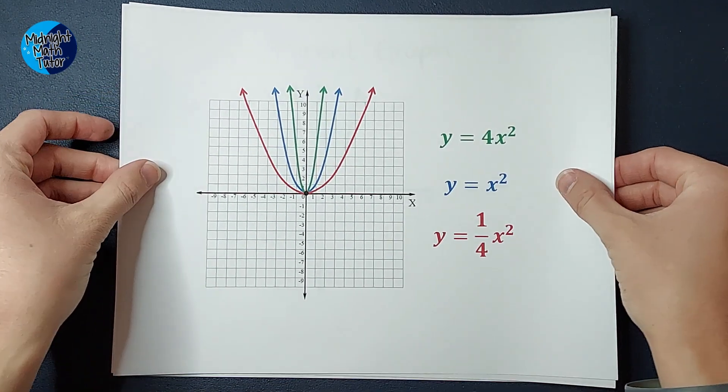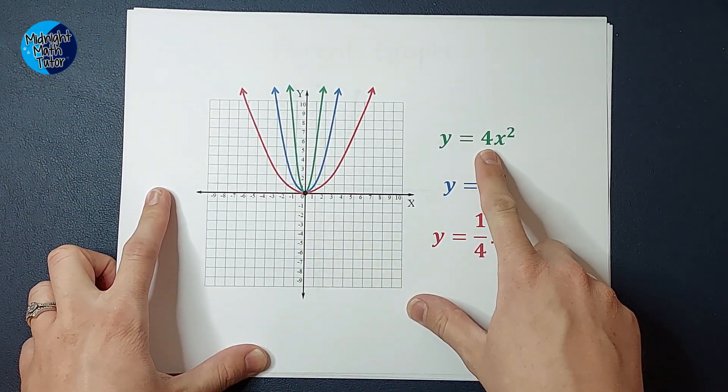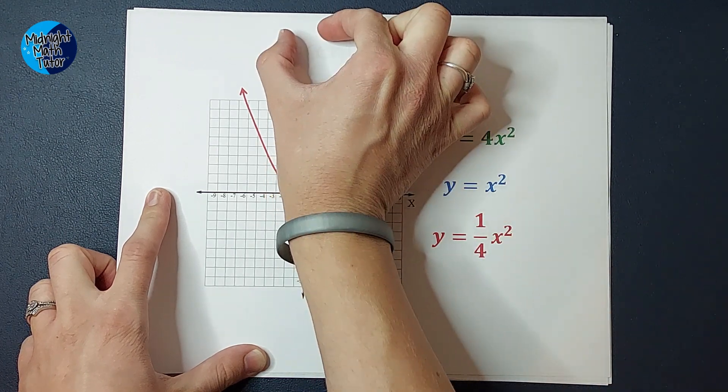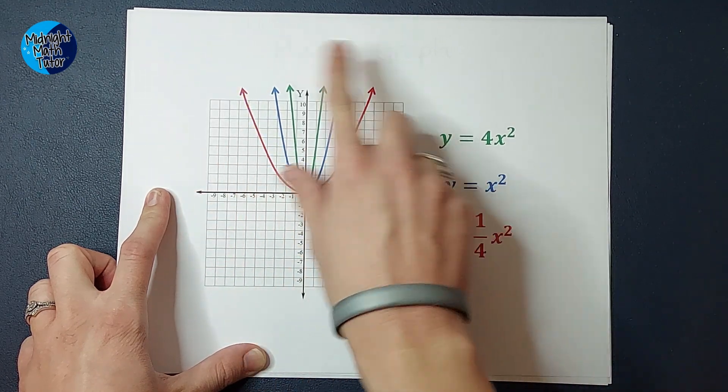Here's that blue again. The blue one is our parent graph, the y equals x squared. The green is when I have a 4 in front, see how it gets skinnier? And the red is when I have a fraction in front that it gets compressed.